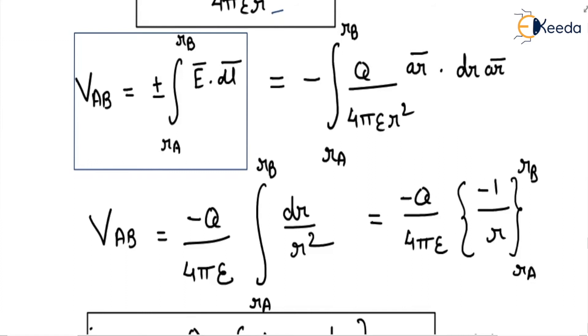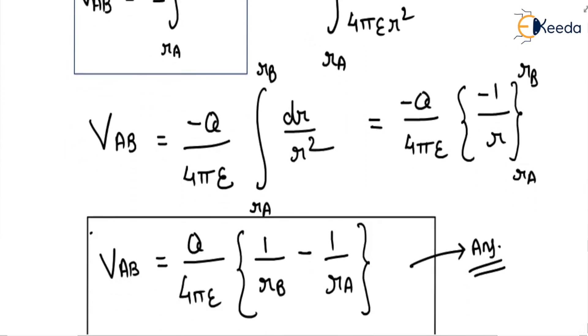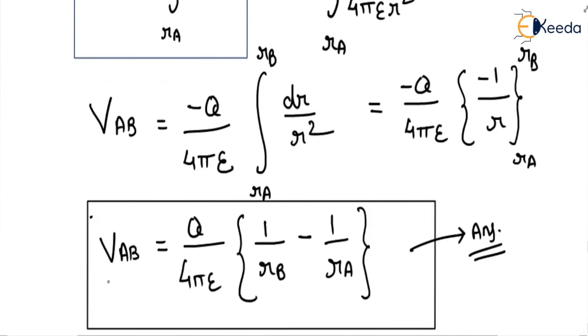The minus and minus will cancel, and this integration will result in the answer as VAB = q/(4πε₀)[1/rB - 1/rA]. So this is our answer.